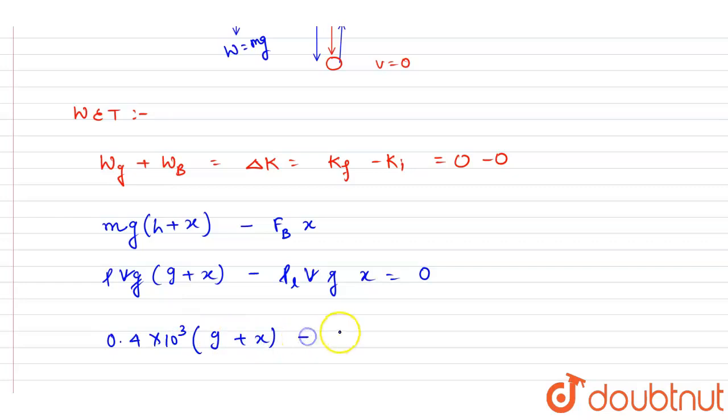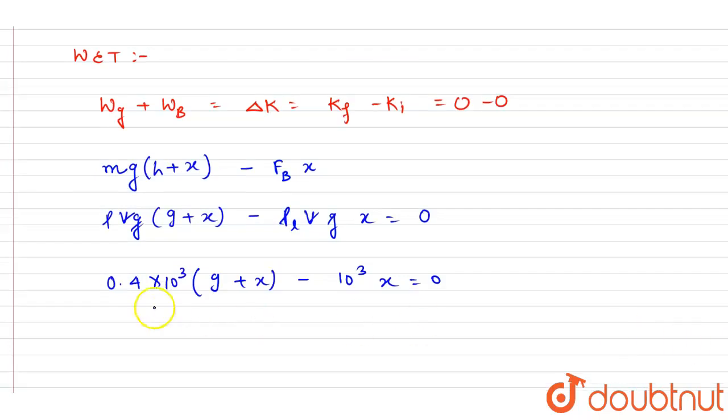9 minus this into x. So if you divide this equation by 100, you will write down this is 4 into this, 4 into 9 plus x, and if you divide it by 100, you will get 10x is